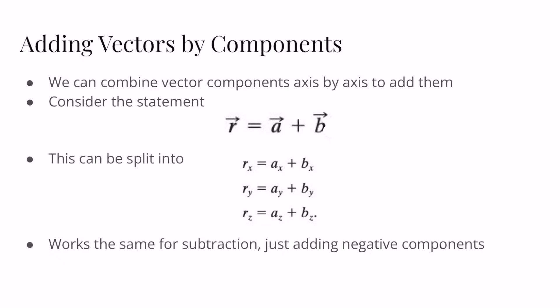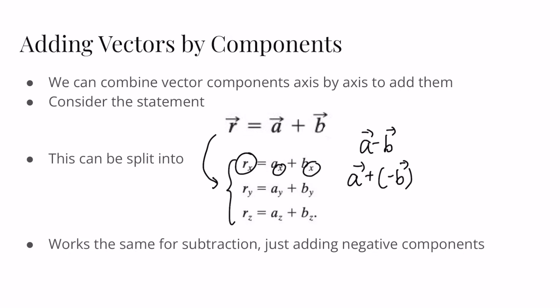After we split vectors into components, we can combine them axis by axis to add them. Consider A plus B giving us a new vector R, where both A and B are already vectors. This singular equation splits into three separate equations — for the x, y, and z components — so for each component of the new vector we simply add the respective components of the original vectors. For subtraction, such as A minus B, you're simply adding a negative component, so the result points in the other direction.